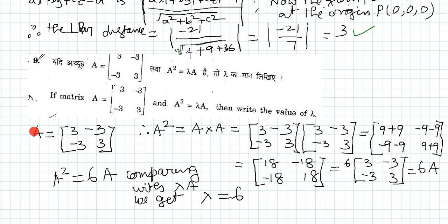So given matrix A is 3 minus 3 minus 3 plus 3, therefore A square is equal to A into A, that is equal to 3 minus 3 minus 3 plus 3 multiplied by 3 minus 3 minus 3 plus 3.